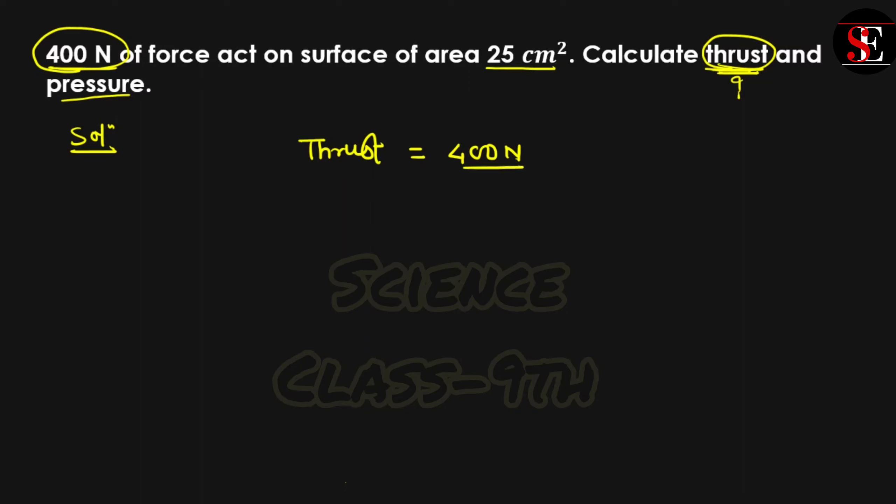Now, pressure is the formula of force by area. The force is always written in Newton. The area you have to write in square meter. The problem is, here you have given area in cm². Then you have to change it into square meter.